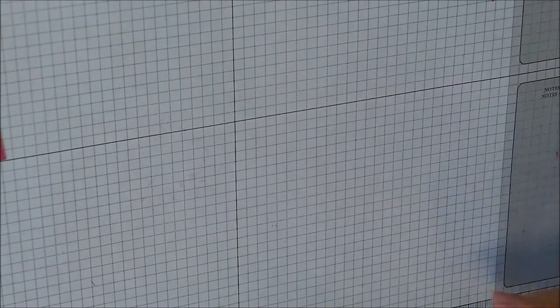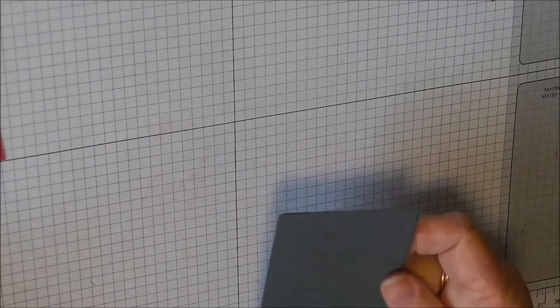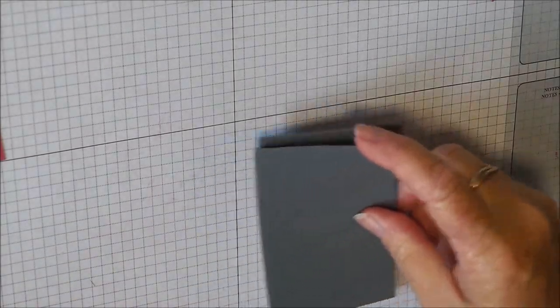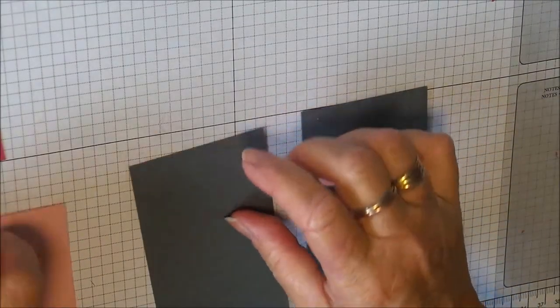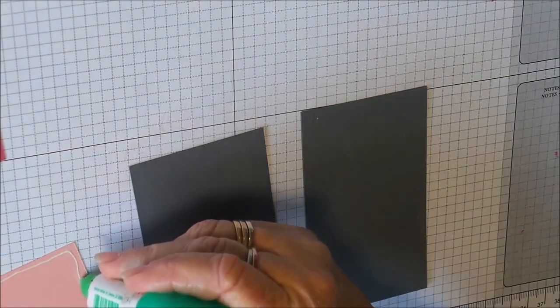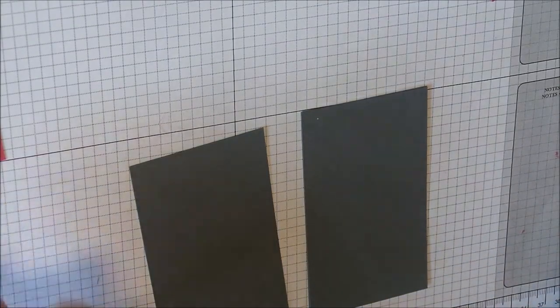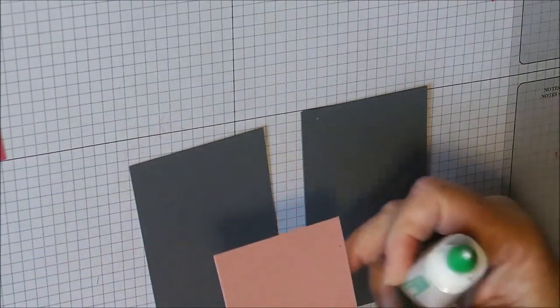We're going to start with our Basic Grey, and I'm using Tombow multi-purpose liquid glue today. We'll start with our Basic Grey, then we'll put some Blushing Bride and then one of our Whisper White panels on. I usually store my Tombow upside down so that the glue is always at the top of the nozzle. You only need a tiny bit, and we're going to stick that down.